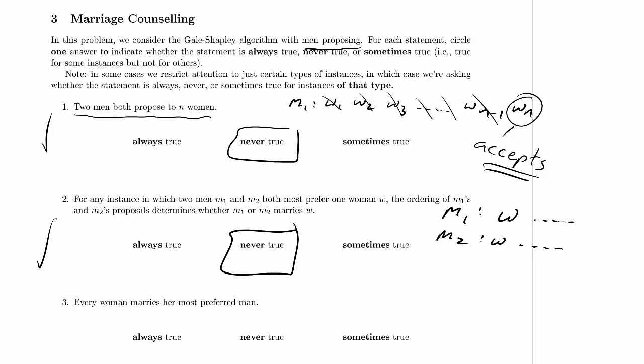Next: every woman marries her most preferred man. Women get their pessimal outcome among all stable matchings — does that mean it's never the case that every woman marries her most preferred man? Not really. We can have w-1 most prefer m-1, w-2 most prefer m-2, w-3 most prefer m-3, and so on, and it doesn't matter what they list as the rest of their preferences.